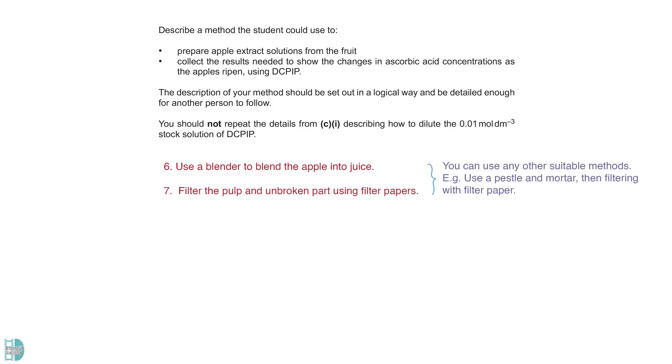Filter the pulp and unbroken parts using filter paper or muslin cloth. We can now use the extract for the titration. You can use any other suitable method to crush and filter the apples. For example, using a pestle and mortar, then filtering with filter paper.